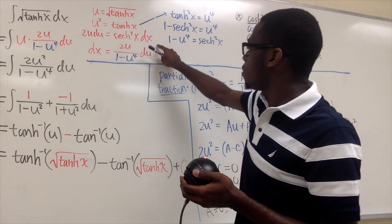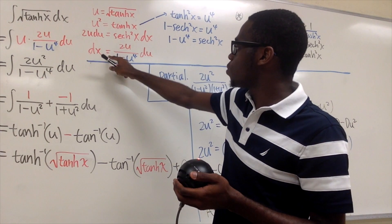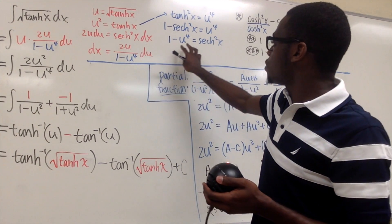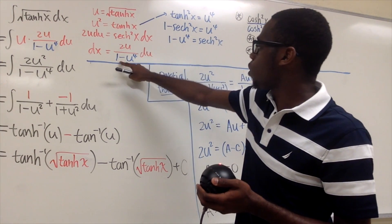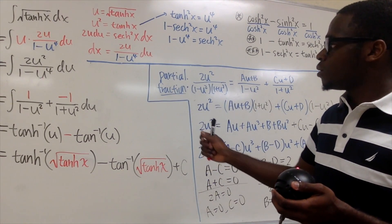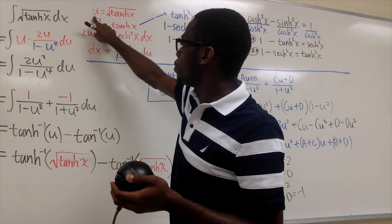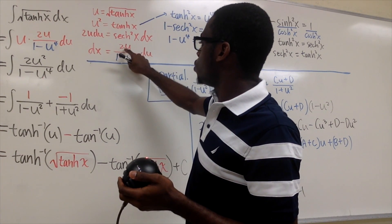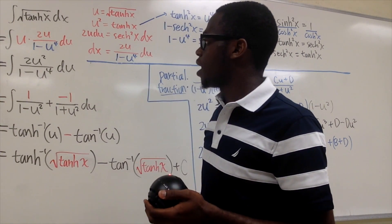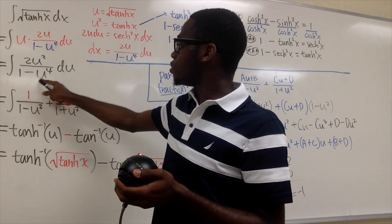From this point, if we divide both sides by sech²(x), we get dx = 2u / sech²(x) du, and since sech²(x) = 1 − u⁴, dx = 2u / (1 − u⁴) du. Going back to the integral: √(tanh(x)) = u and dx = 2u / (1 − u⁴) du. Multiplying them together gives us 2u² / (1 − u⁴) du.